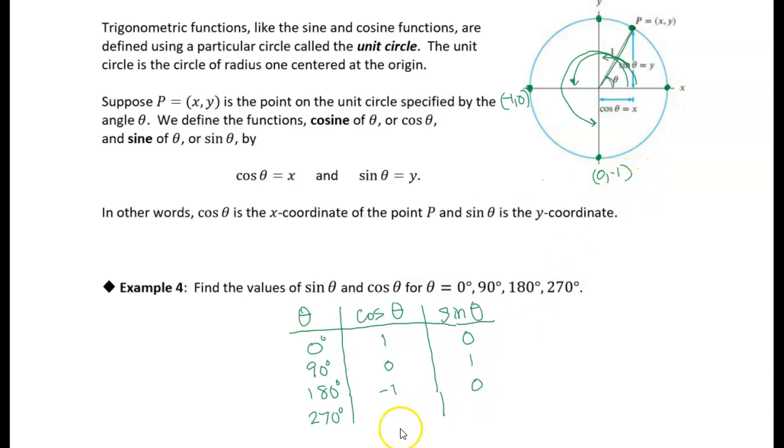So the x is 0, the y is negative 1. So the cosine of 270 degrees is 0. The sine of 270 degrees is a negative 1.